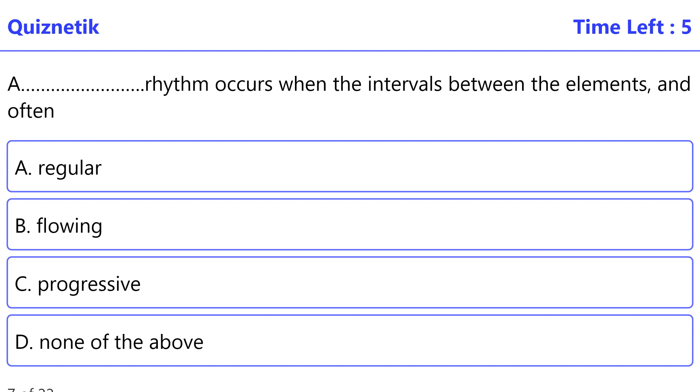Regular rhythm occurs when the intervals between the elements, and often the elements themselves, are similar in size or length. The correct option is A, regular.